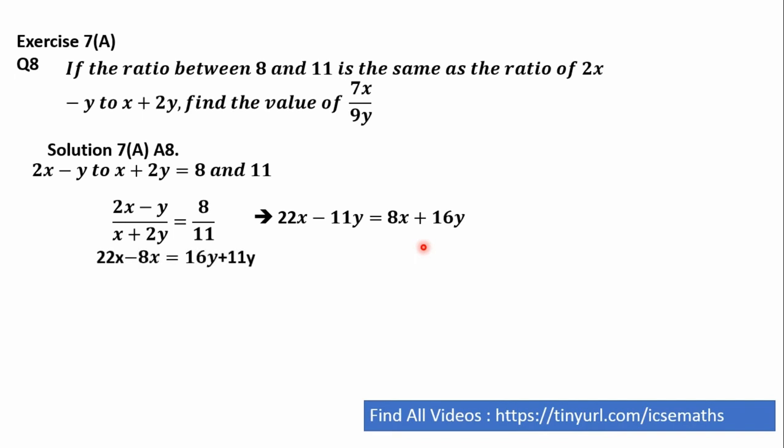Now if we solve this further and make x value at one side and y value at another side. So I am putting 8x on left hand side, that is why it is coming 22x minus 8x, and I am moving 11y to right hand side. So minus 11 become plus 11y, so that is why it is coming 16y plus 11y.